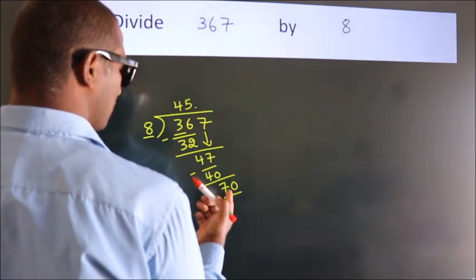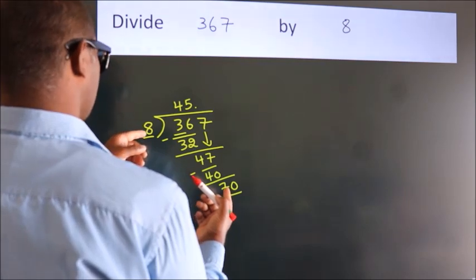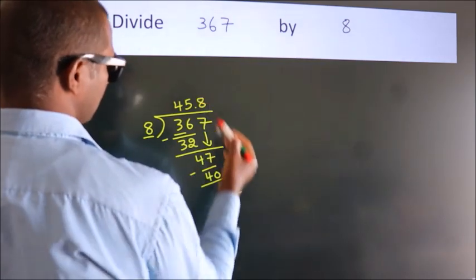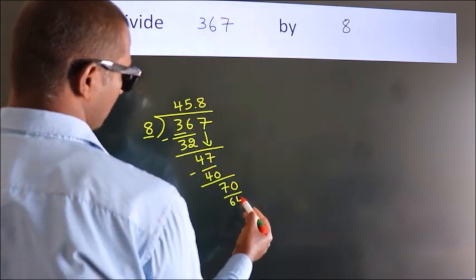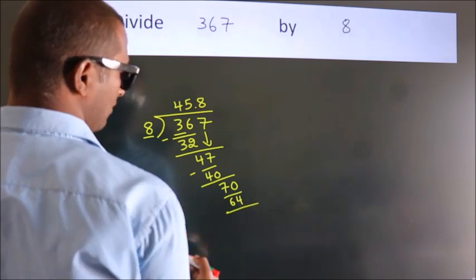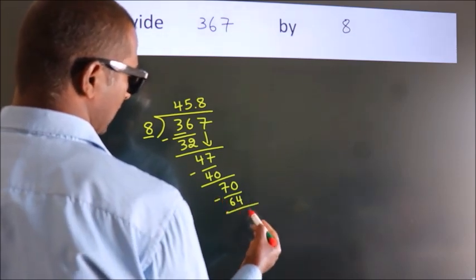A number close to 70 in the 8 table is 8 eights, 64. Now we subtract; we get 6.